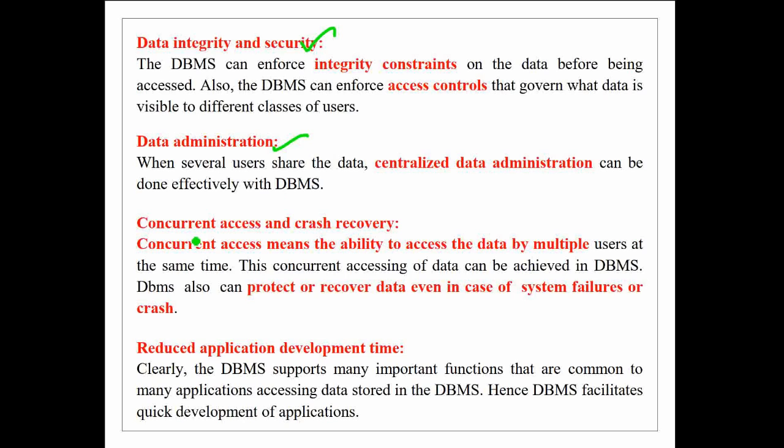Next is concurrent access and crash recovery. Concurrent access means many users can access the data at the same time, and this can be efficiently achieved in DBMS. DBMS also protects and recovers data even in case of system failure and crash.